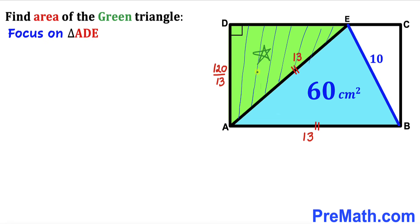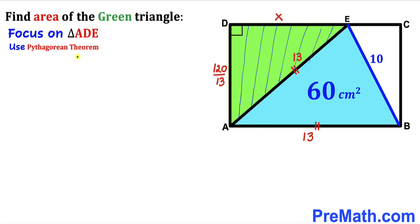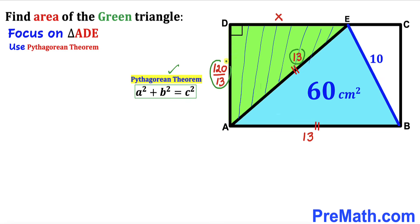Now focusing on the green shaded triangle ADE: the angle at D is 90° since we're dealing with a rectangle. Let DE = x. Using the Pythagorean theorem — a² + b² = c² — the hypotenuse is AE = 13, and the two legs are AD = 120/13 and x. So: x² + (120/13)² = 13².